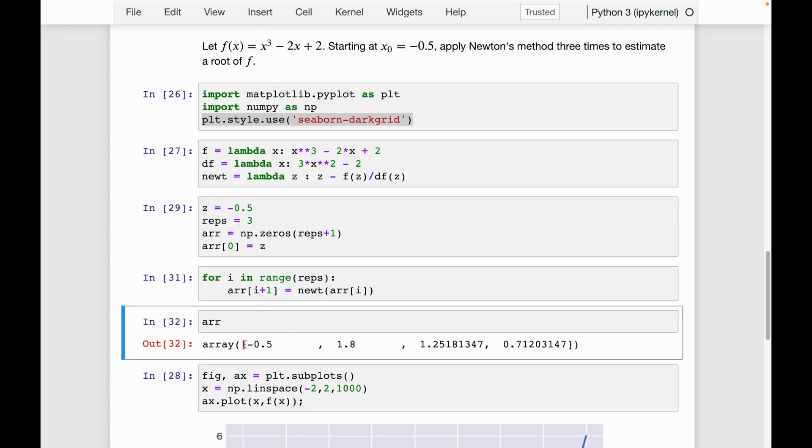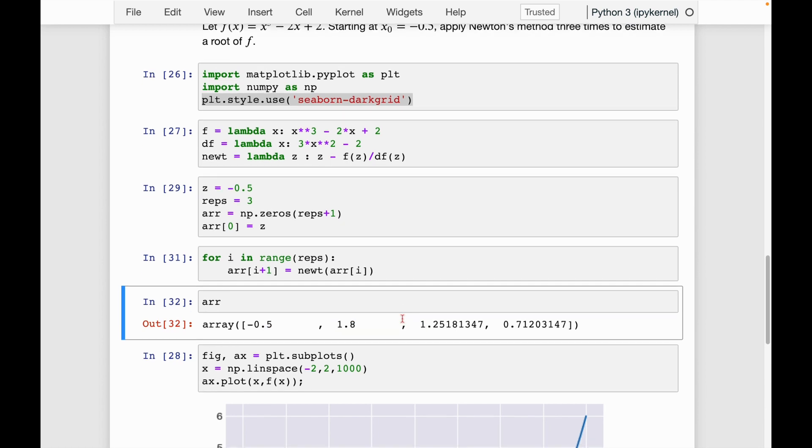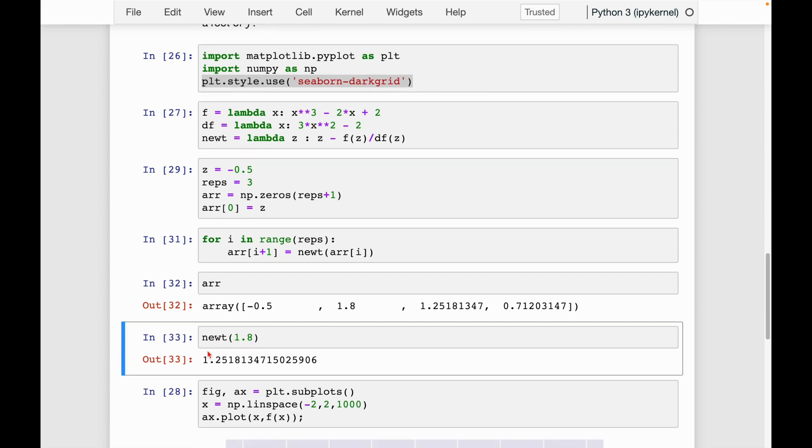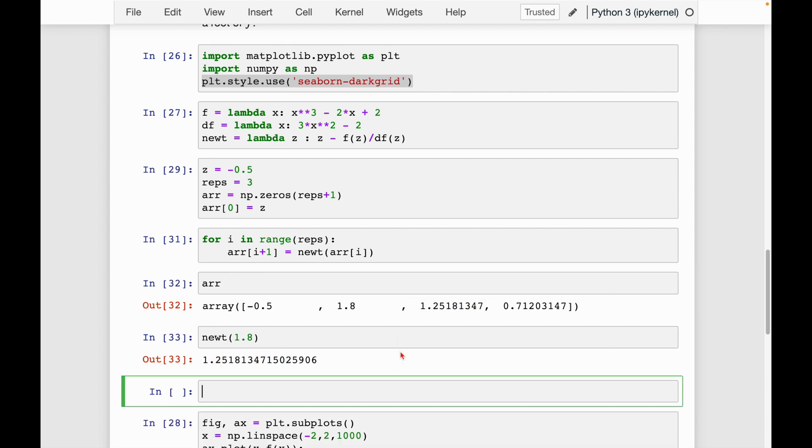So we can see here we do negative 0.5, then 1.8. So for instance, if I run newt of 1.8, this gives me 1.2518, which is the value that's placed here.